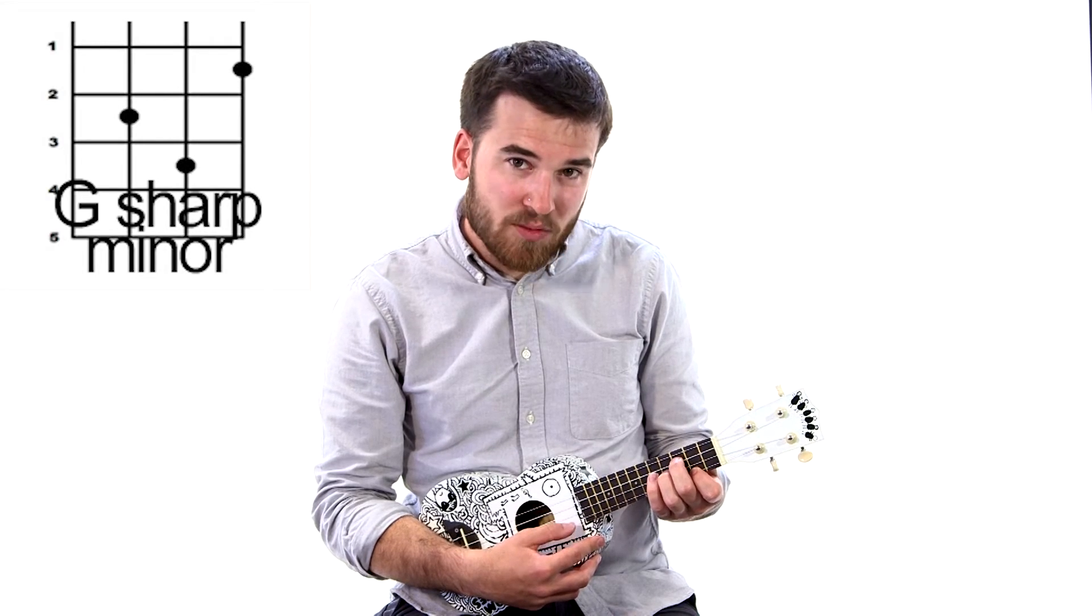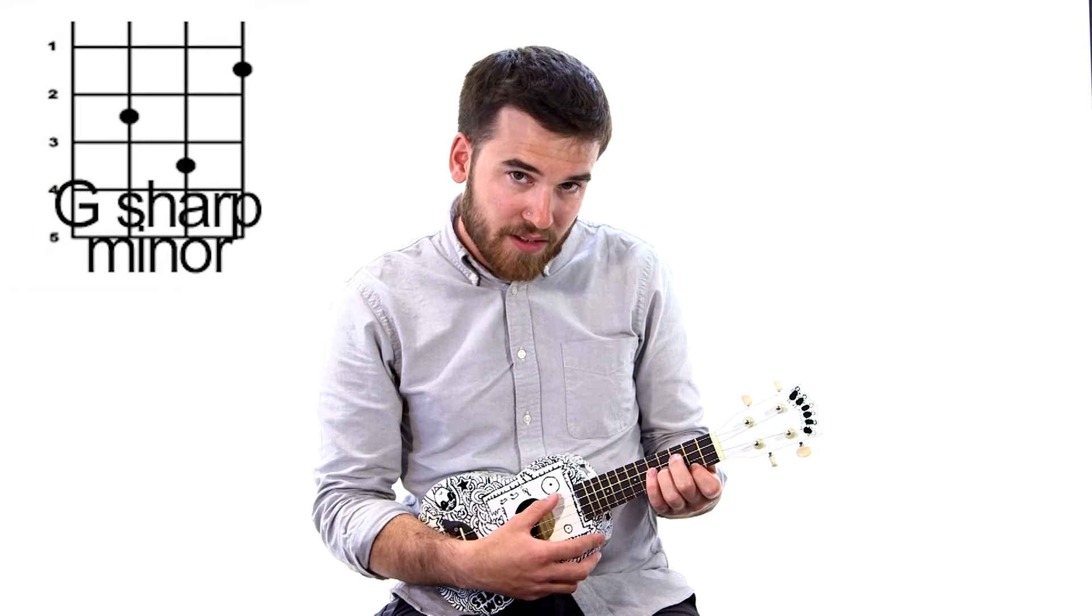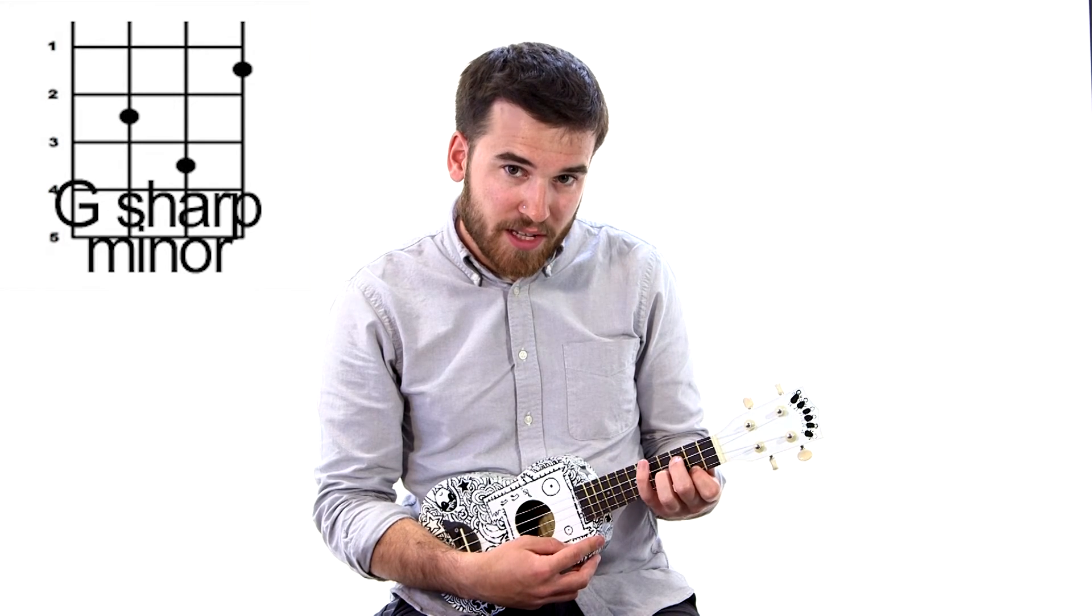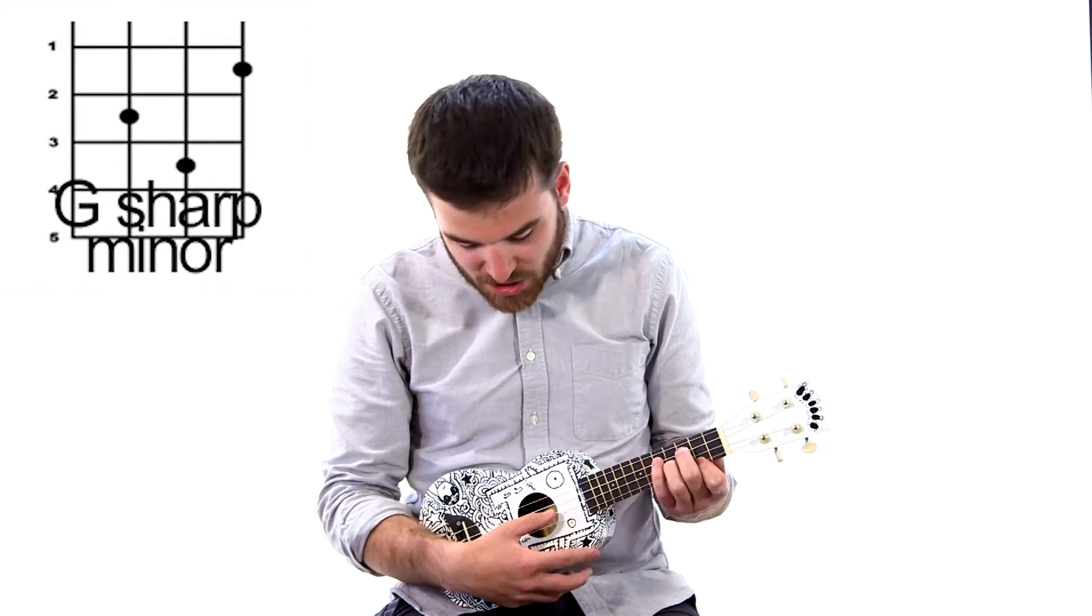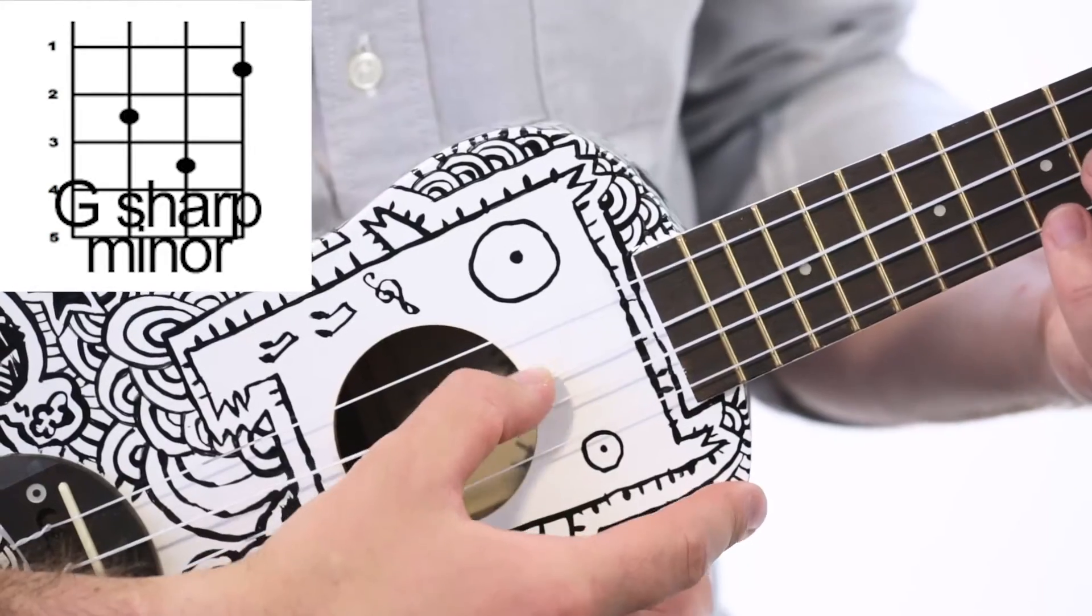Now you're going to be really careful with G sharp so that you don't strike that first string down there. Otherwise that sounds a bit funny. So the way to do that is just with your right hand thumb, top three strings.